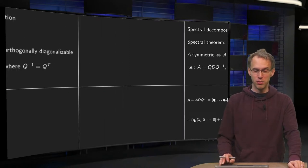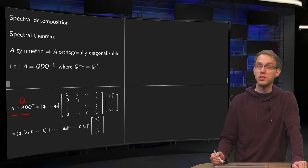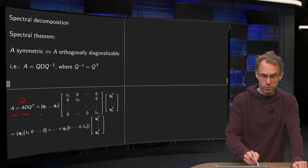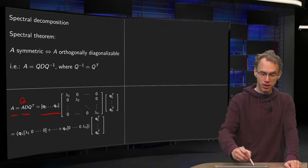Let's see how we do that. First of all we are writing A as Q times D times Q transpose. Then we know what our Q is, a matrix with the eigenvectors Q1 up to Qn.